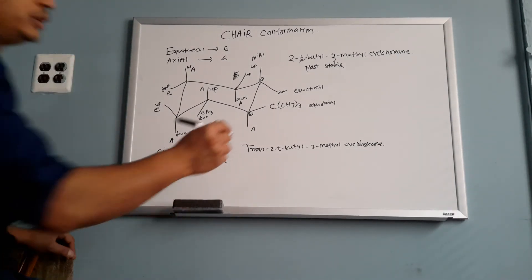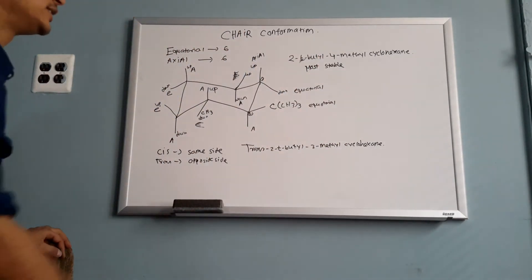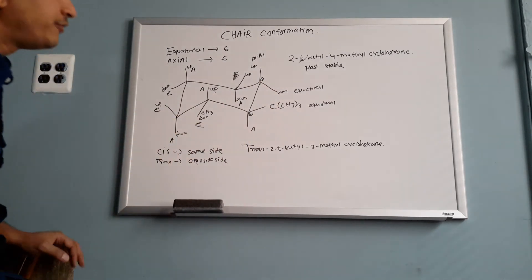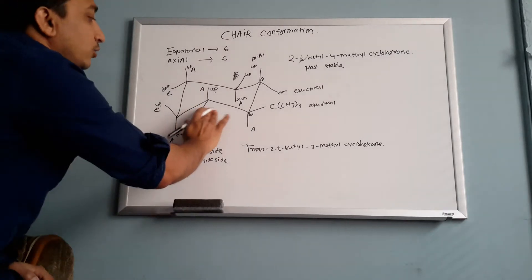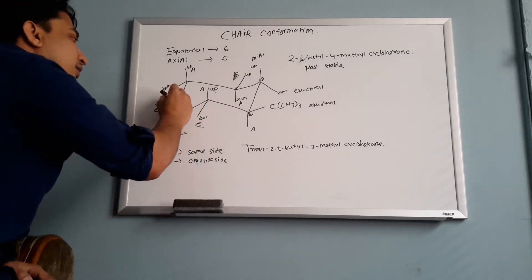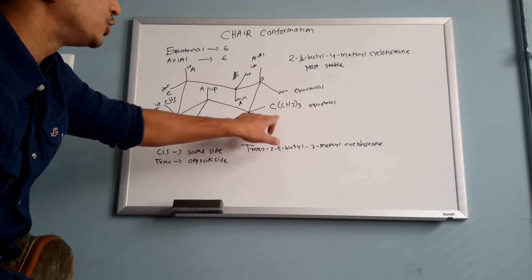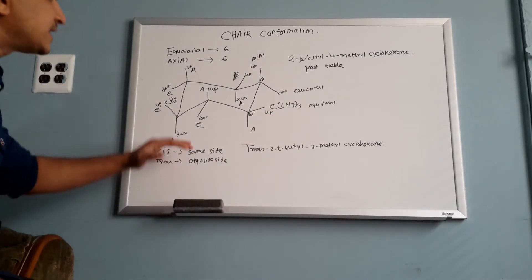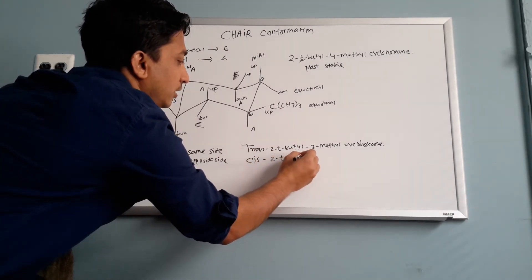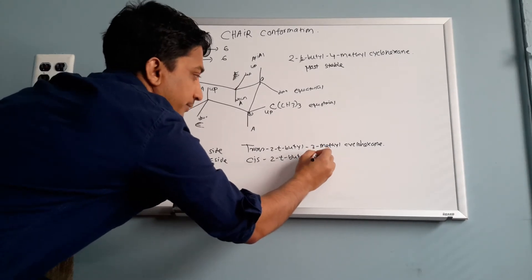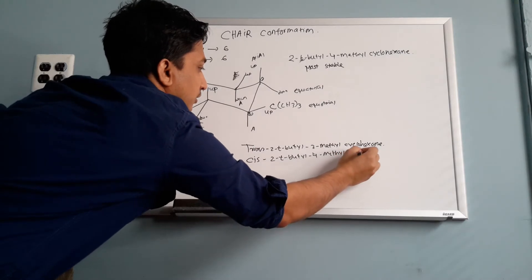Now I have a correction example for you. If I tell you 2-t-butyl-4-methyl cyclohexane — positions one, two, three, four — draw the most stable chair conformation. Where are you going to put your CH3? You put your CH3 there. This CH3 is equatorial and in the up position. This one is also equatorial and up position. So what happened? Both are on the same side. That's why this is cis: cis-2-t-butyl-4-methyl cyclohexane.